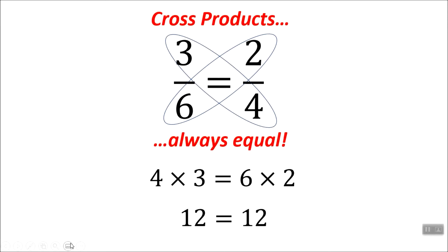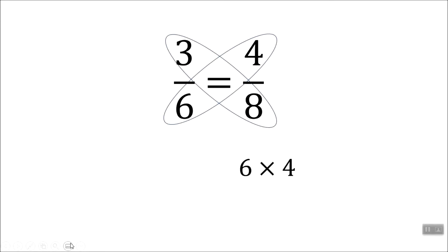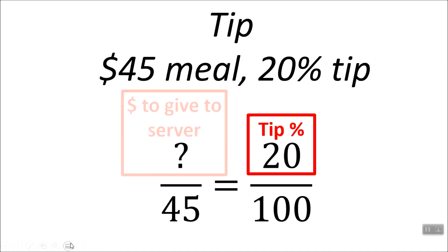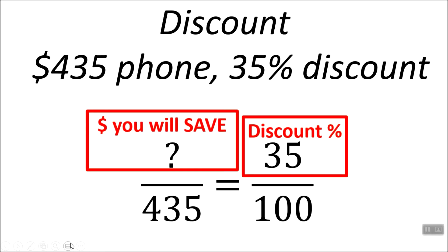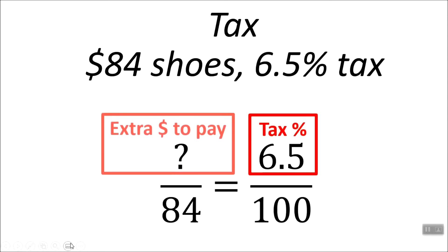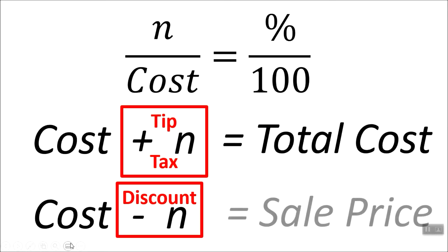That's the main thing you need to know for proportions, and they come in really handy. Do you want to figure out how much to tip your waiter or waitress? Do you want to figure out how much money you'll save, or how much tax you have to pay, or your total cost or sale price? Just take whatever you figured out and add it or subtract it to your original cost.